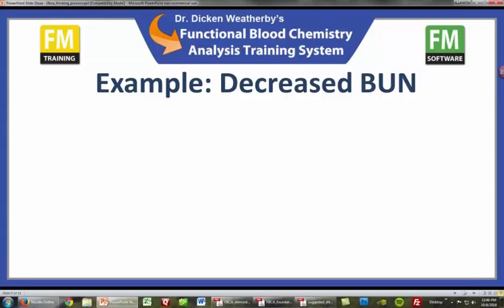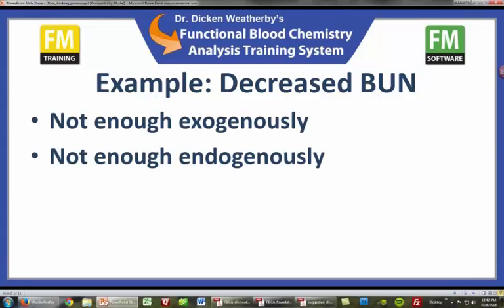A decreased BUN level is associated with a diet that is low in protein, protein deficiency, that type of thing. The amount of urea excreted as BUN varies with the amount of dietary protein intake, so low protein diets may show up with a decreased BUN level below 10 mg/dL or 3.57 mmol/L. We should also think about the GI tract here — something that should come to mind is malabsorption. Decreased BUN is associated with chronic intestinal malabsorption, an inability of nutrients to be absorbed through the intestinal wall. Malabsorption can lead to a functional protein deficit, which in turn will lead to lower levels of protein catabolism and low BUN levels.